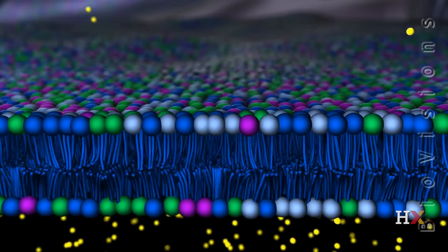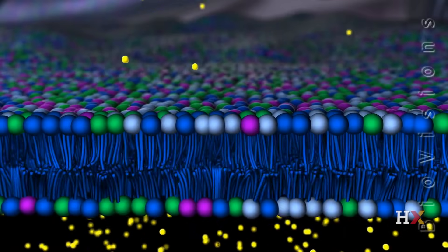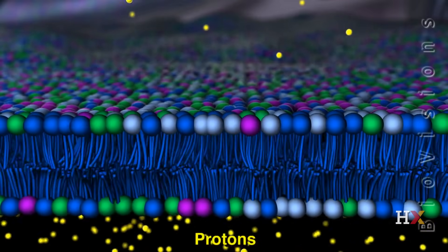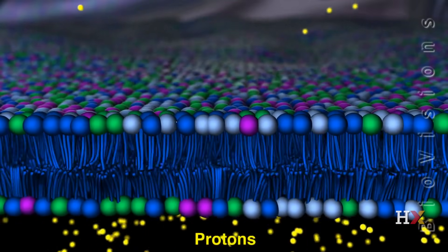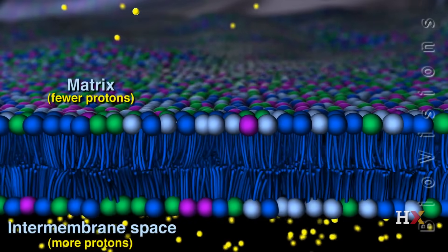One of the key roles of this membrane is to act as a barrier to positively charged particles called protons, thus allowing a concentration gradient to be maintained where the inter-membrane space has far more protons than the matrix.